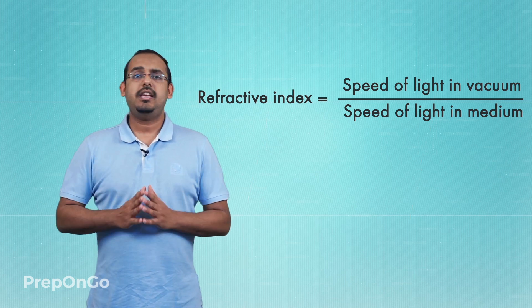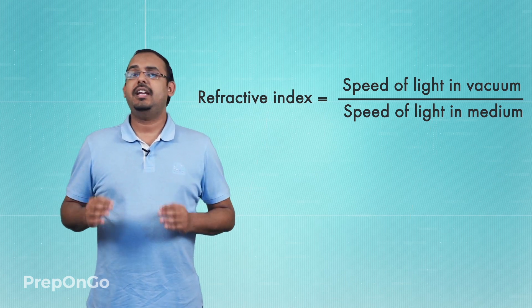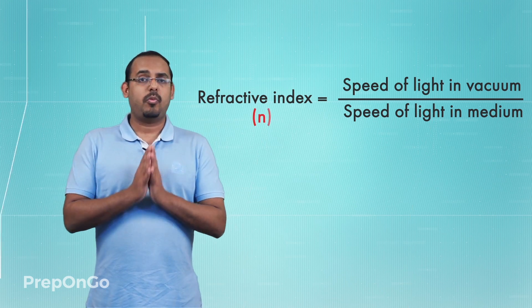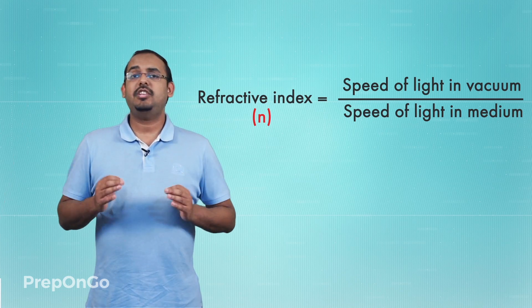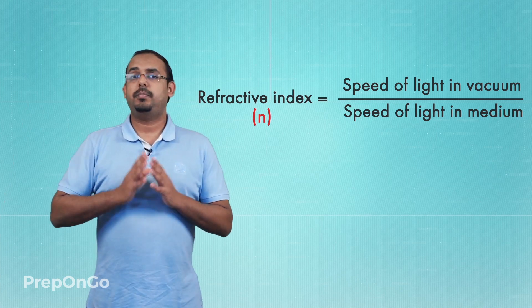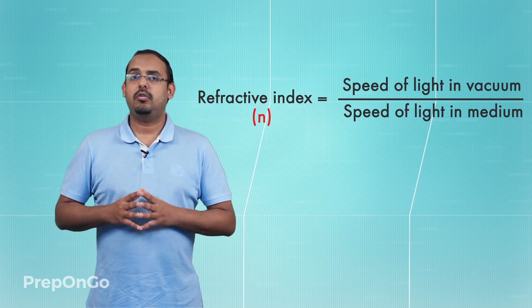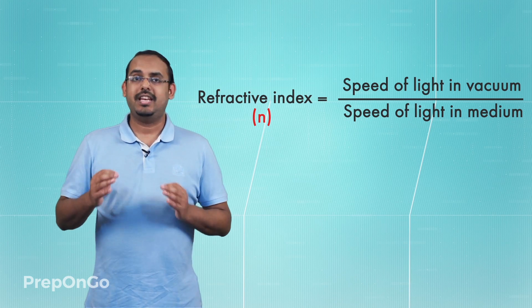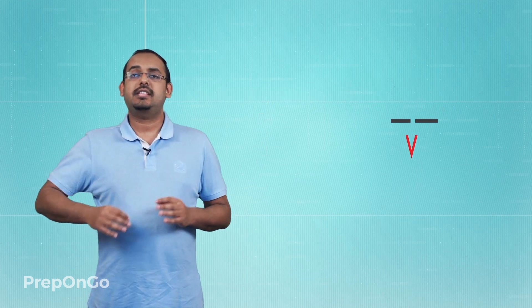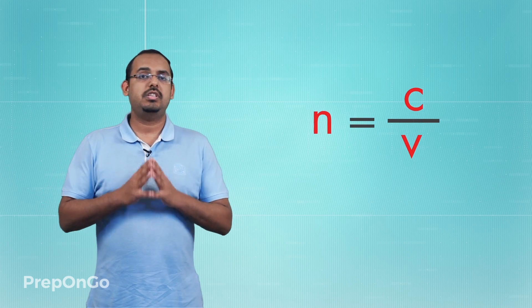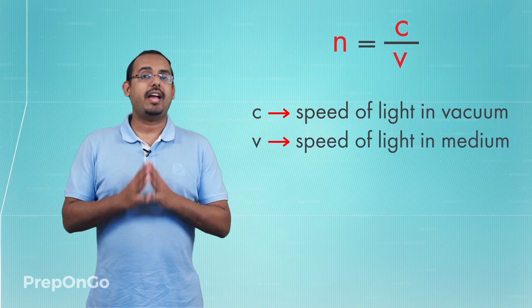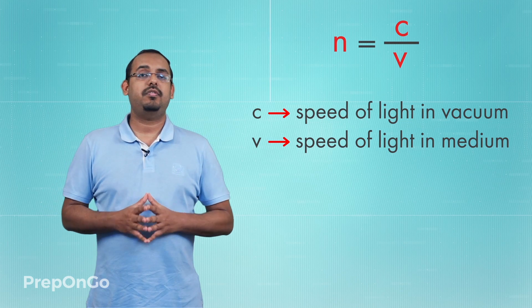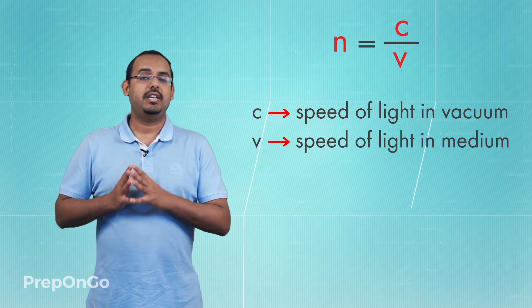Mathematically, we denote the refractive index as the small letter n, and it is calculated by the ratio of the speed of light in vacuum to the speed of light in any particular medium. We can also represent this as n equals c upon v, where c is the speed of light in vacuum and v is the speed of light in any medium.